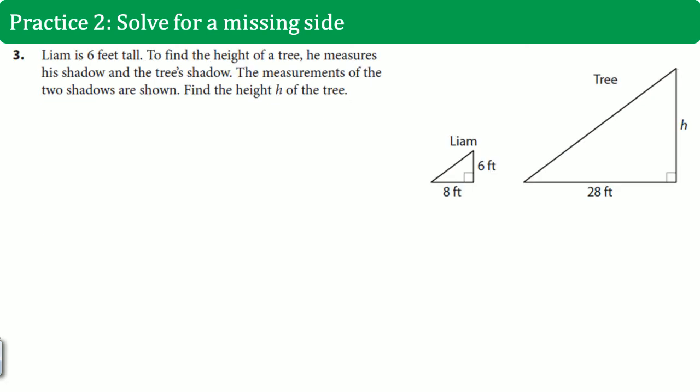Number question 3. Liam is 6 feet tall. To find the height of the tree, he measures his shadow and the tree's shadow. The measure of the two shadows are shown. Find the height, h, of the tree.